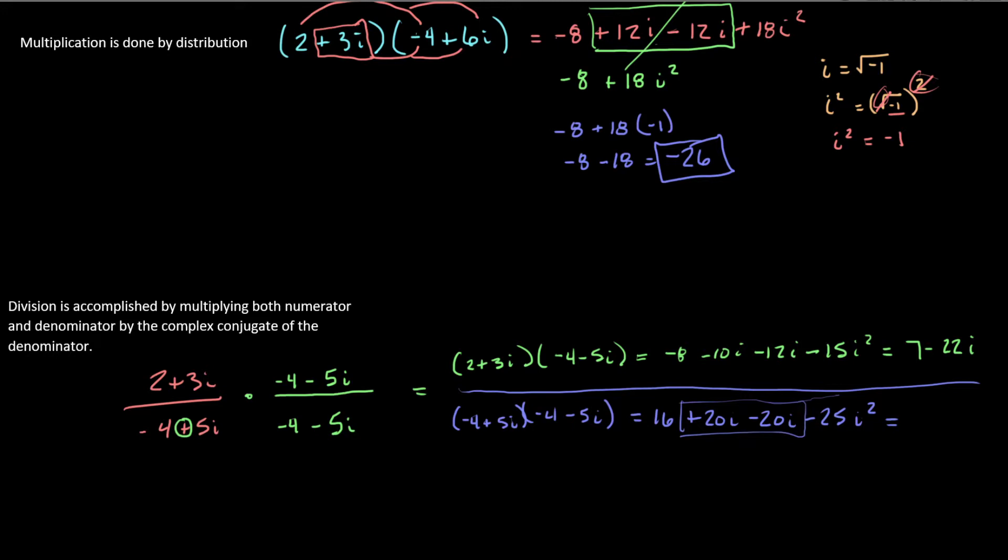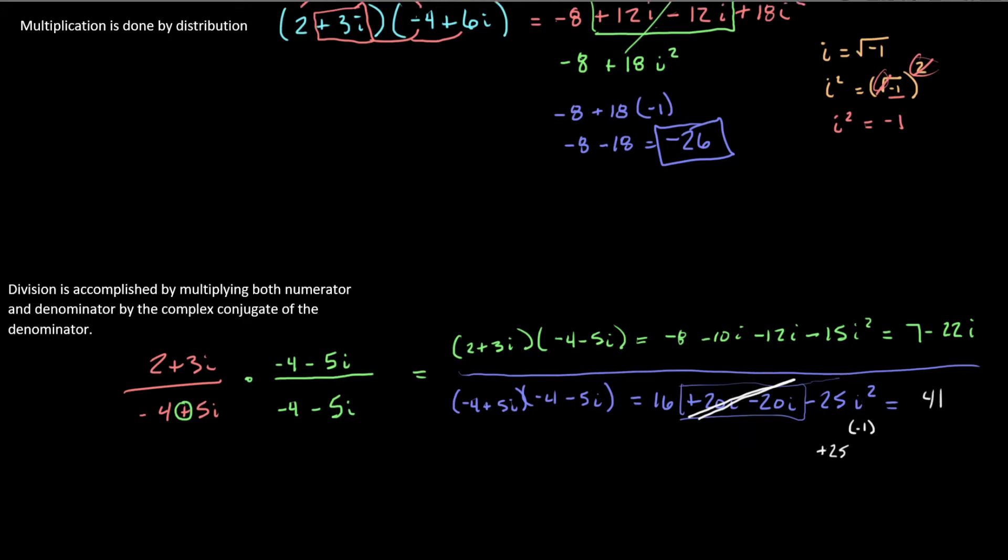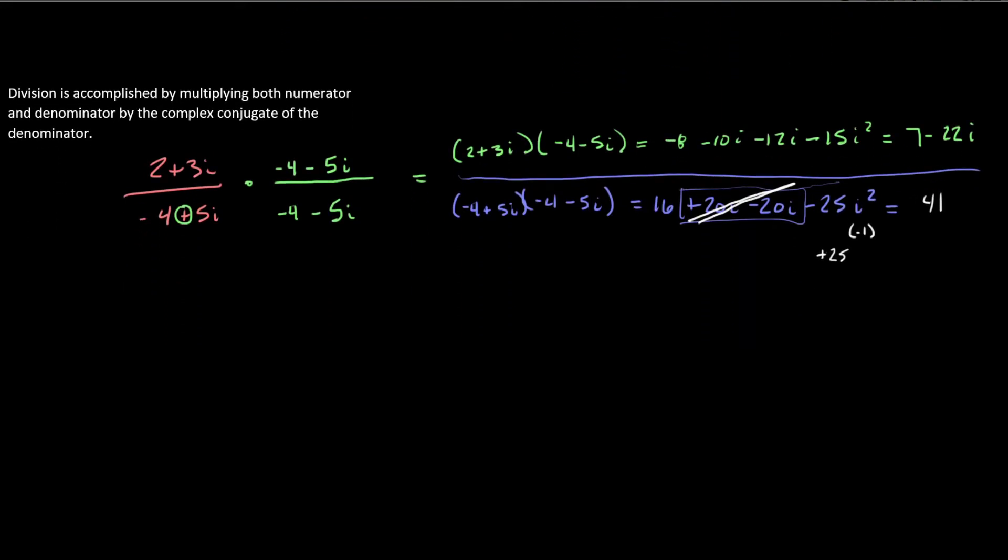These two things are going to eliminate one another. And we're left with 16 minus 25i squared. Remember i squared is negative 1. So this becomes really a plus 25. 16 plus 25 is 41. Our final answer is 7 minus 22i over 41.